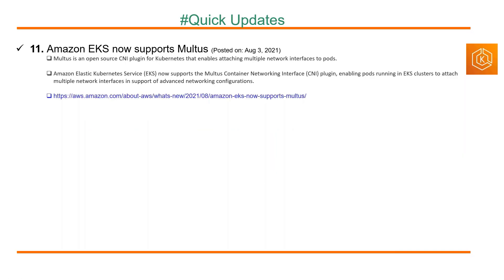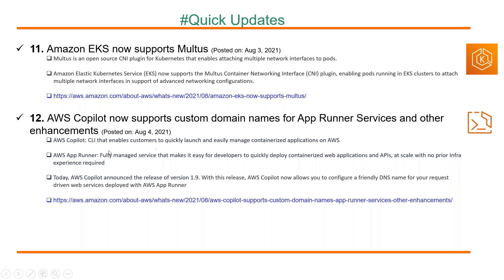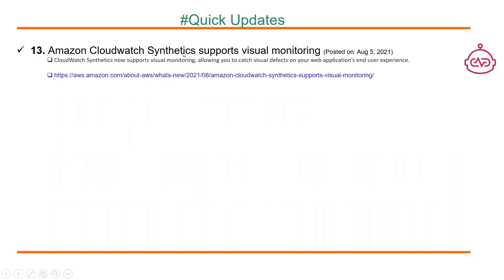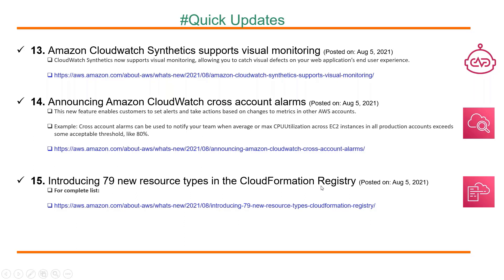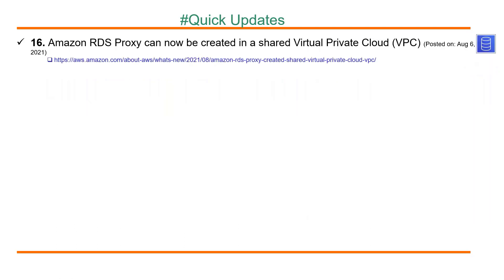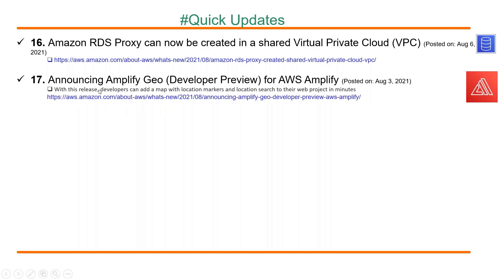Amazon EKS now supports attaching multiple network interfaces to pods. AWS Copilot, the CLI that enables customers to quickly launch and easily manage containerized applications on AWS, now supports custom domain names for App Runner services. Amazon CloudWatch Synthetics supports visual monitoring, allowing you to catch visual defects on web applications and user experience. Amazon CloudWatch now supports cross-account alarms. 79 new resource types were introduced in the CloudFormation registry. Amazon RDS Proxy can now be created in a shared VPC. Amplify Geo is announced — developers can add a map with location markers and location sets to their web projects in minutes.